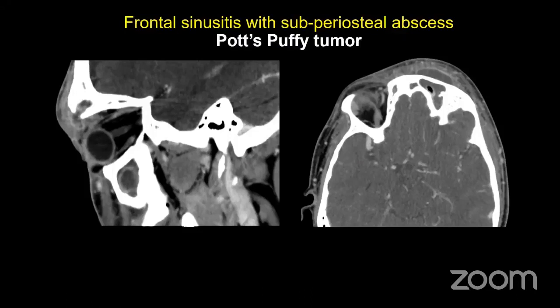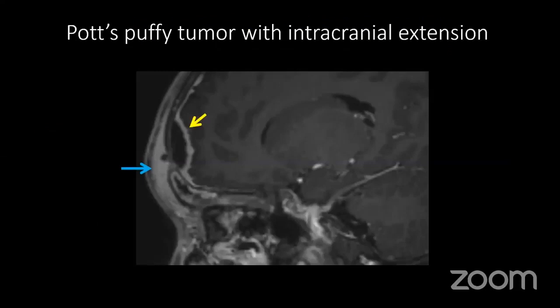There is an entity called Pott's puffy tumor. Whenever you see a scalp abscess in a patient with frontal sinusitis, recognize it as a subperiosteal abscess — and once you have a subperiosteal abscess, there may be an intracranial abscess as well. This is the main value of this finding: historically, before CT, clinicians knew that if a patient had something visible in the scalp, there might be something intracranially as well. Importantly, erosion is not always necessary — even without bone erosion, you can have subperiosteal and epidural intracranial spread.